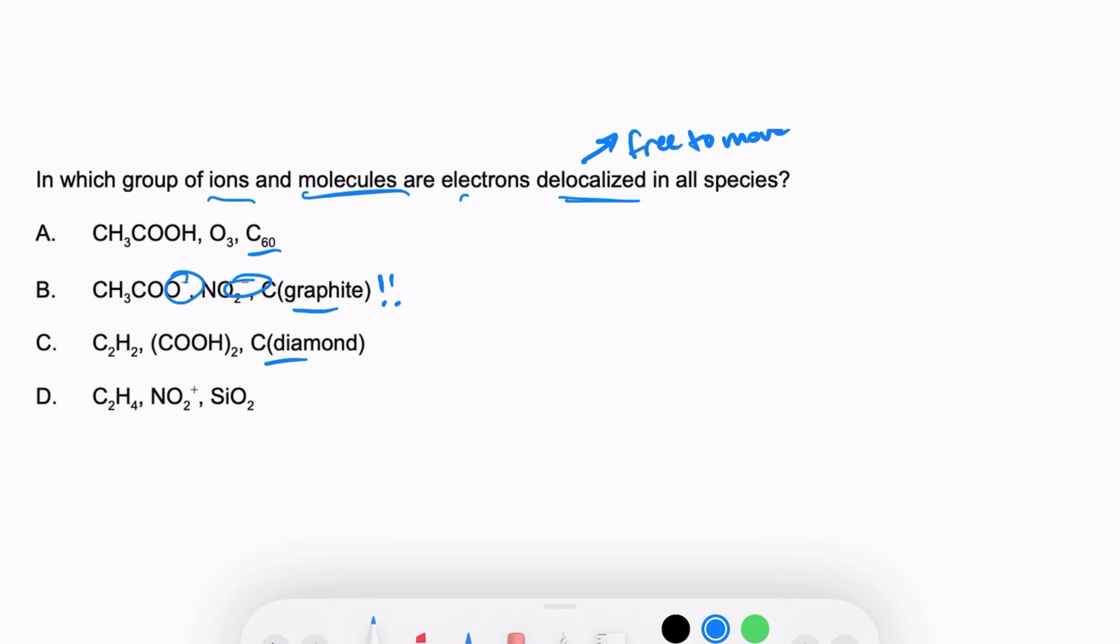Notice there are different types of carbon, and if you didn't memorize those, you might be freaking out. But we don't even need to look at those. We're just going to go through and look at the first molecule for each of these. So CH3COOH would look like that, and there's no delocalized electrons there. All of our atoms are following the octet rule.